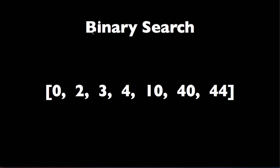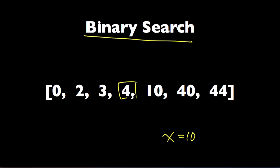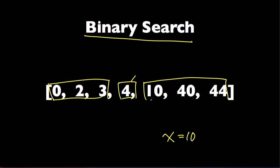So here's binary search. Let's say X is equal to 10. We are trying to find 10 in this array, and the way it works is we start with the middle element, the one in the center. If it's equal to X then we are done. If X is smaller than this element, then we look for it in the left half of the array. If X is larger than this element, we look for X in the right half of the array. Since X is larger than 4, we're going to look for it in the right half of the array and repeat the same procedure for this smaller subarray.